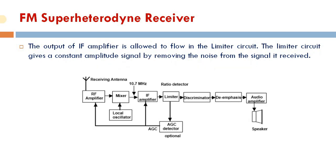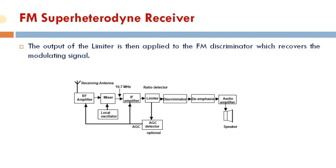This IF signal is again amplified using an intermediate frequency amplifier, called the IF amplifier. The output of the IF amplifier is then allowed to flow into the limiter circuit, which gives a constant amplitude signal by removing the noise from the received signal.